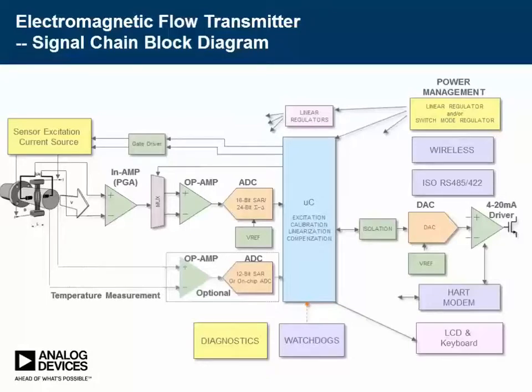This is a typical block diagram for the industrial magnetic flow meter. The flow meter system consists of a power supply, sensor coil excitation, signal conditioning, analog-to-digital converter, processor, display, keyboard, logic, IO, and multiple communications like 4-20mA, HART, RS-485/232, Profibus, Modbus, and Foundation Fieldbus.